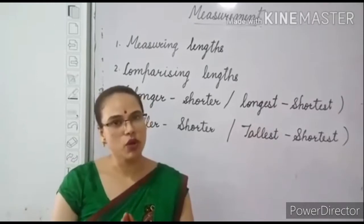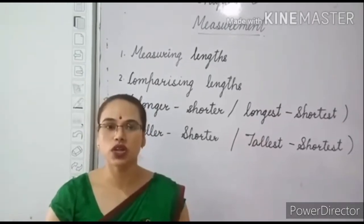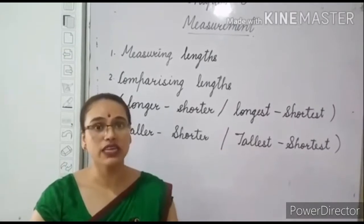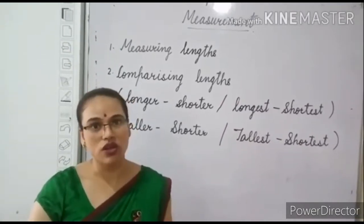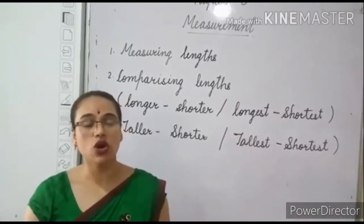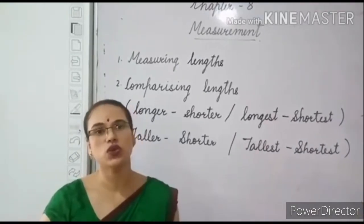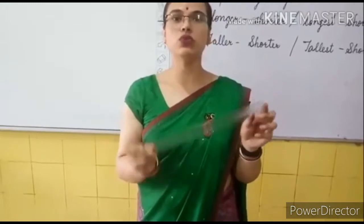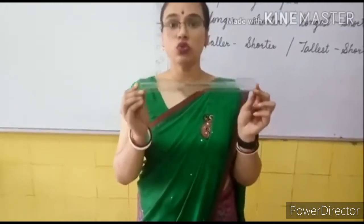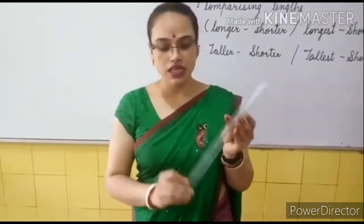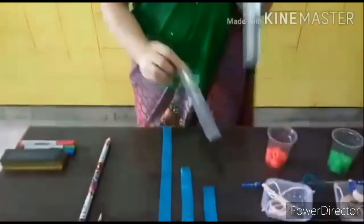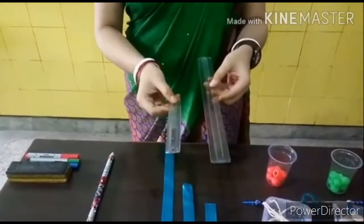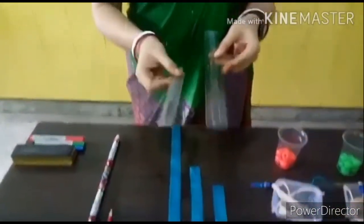Now, with the help of some objects, we are going to learn how to measure the length or how to find which object is taller, which object is shorter, or which one is longest or which one is shortest. Students, we use a scale or a ruler to measure a length. This is a standard method to measure anything with the help of these scales, which you use in your daily life.